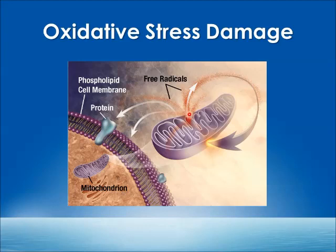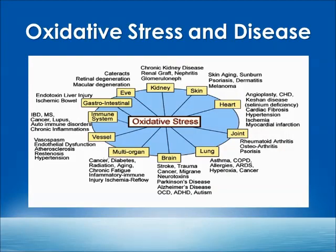Oxidative stress damage happens from inside the mitochondria and starts to damage the mitochondria itself and outside, spreading to different parts of the cell and causing a cascade of damage. Almost 90% of all diseases have been linked to oxidative stress, which is caused by free radicals. Everything from cancer to diabetes to Alzheimer's, Parkinson's, and autism — these are the big ones. Anything not related to bacterial or viral infections can be thought of as related to oxidative stress. For example, if you look up 'oxidative stress and atherosclerosis,' there are research articles that show the link between the two.